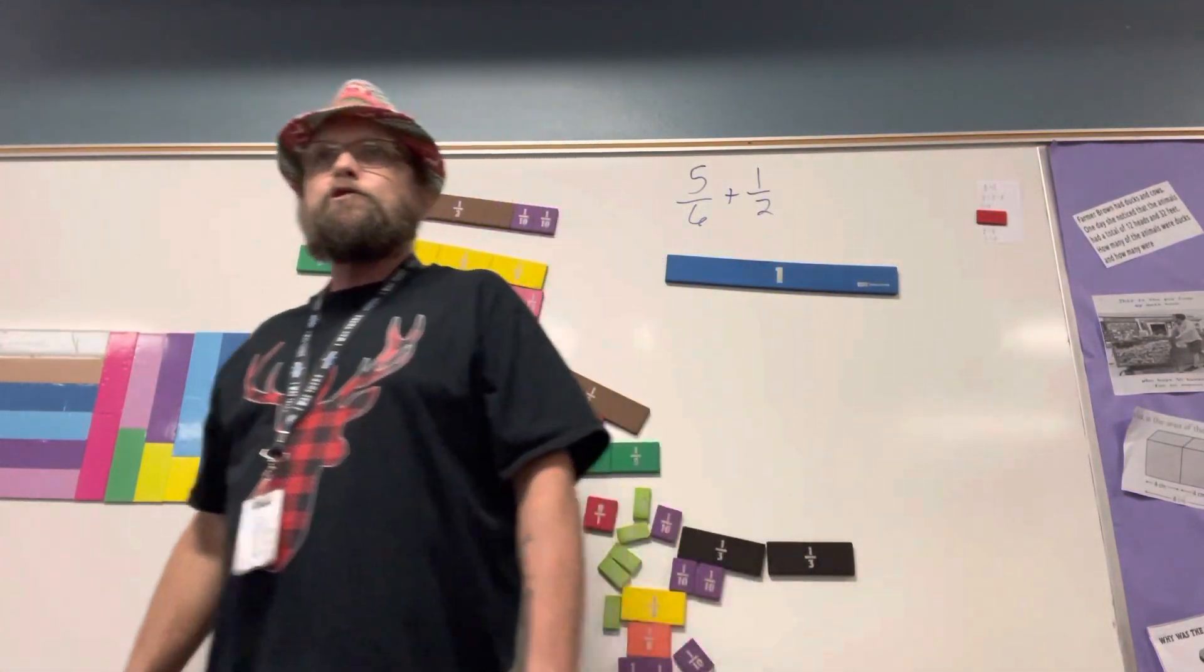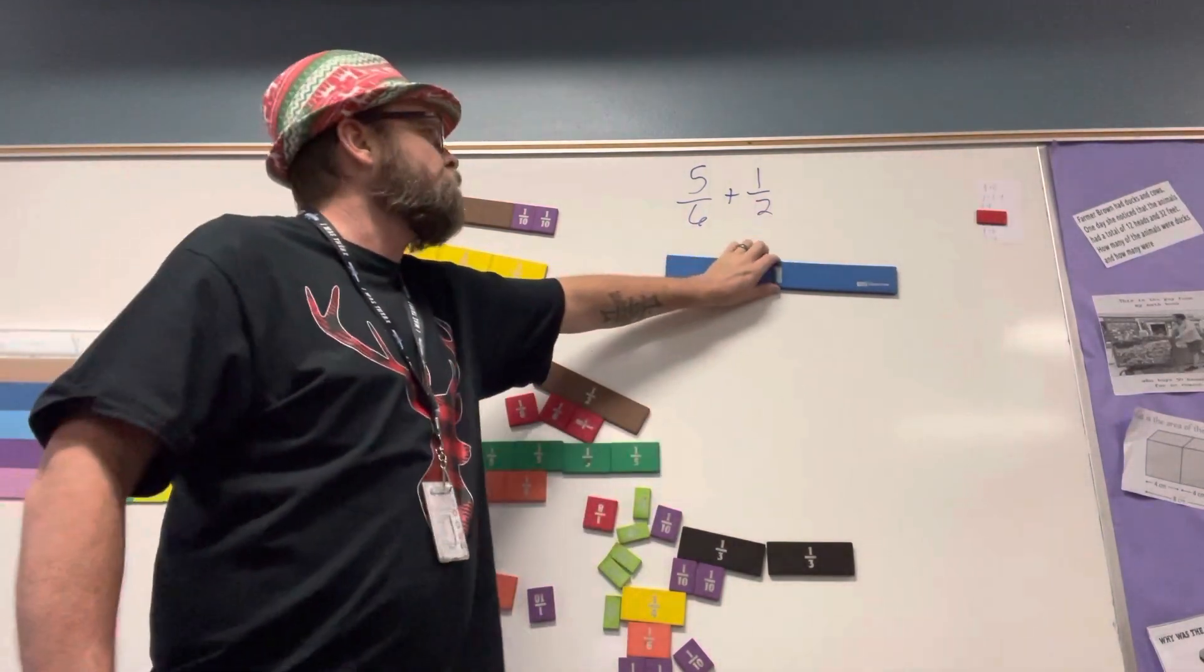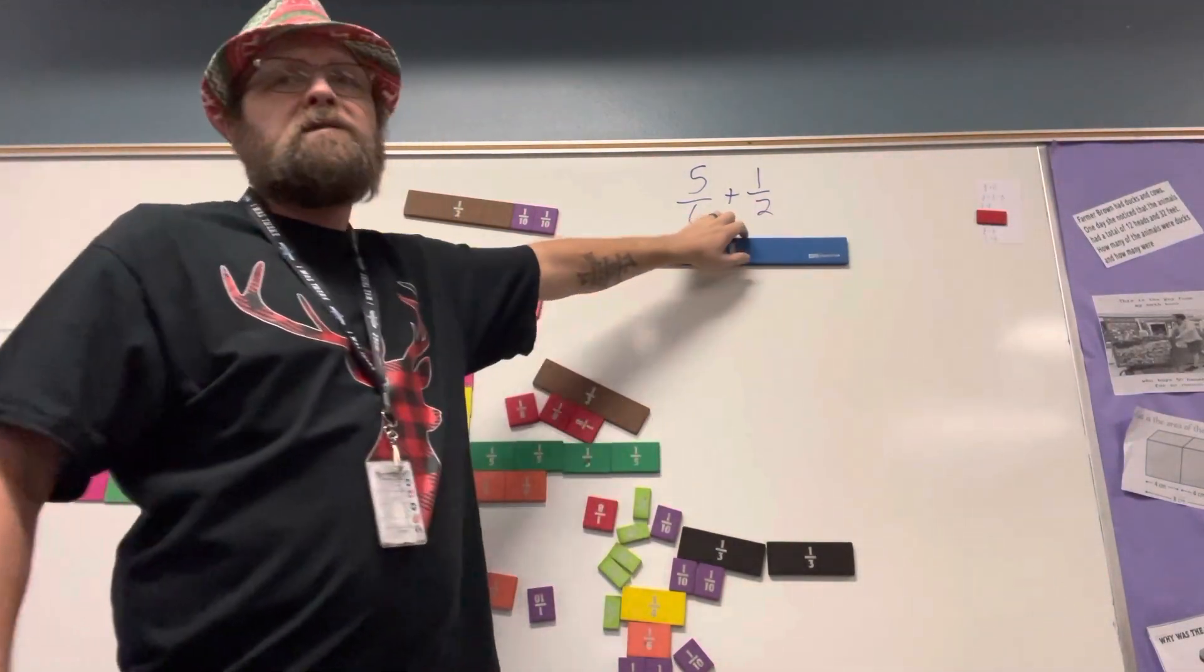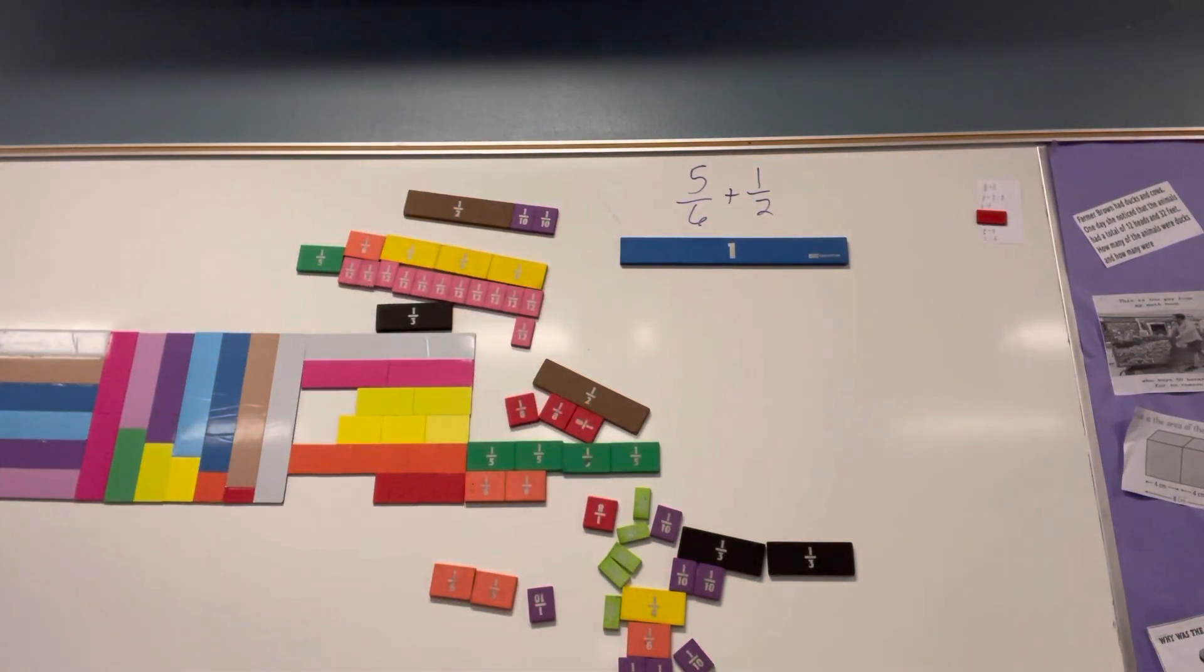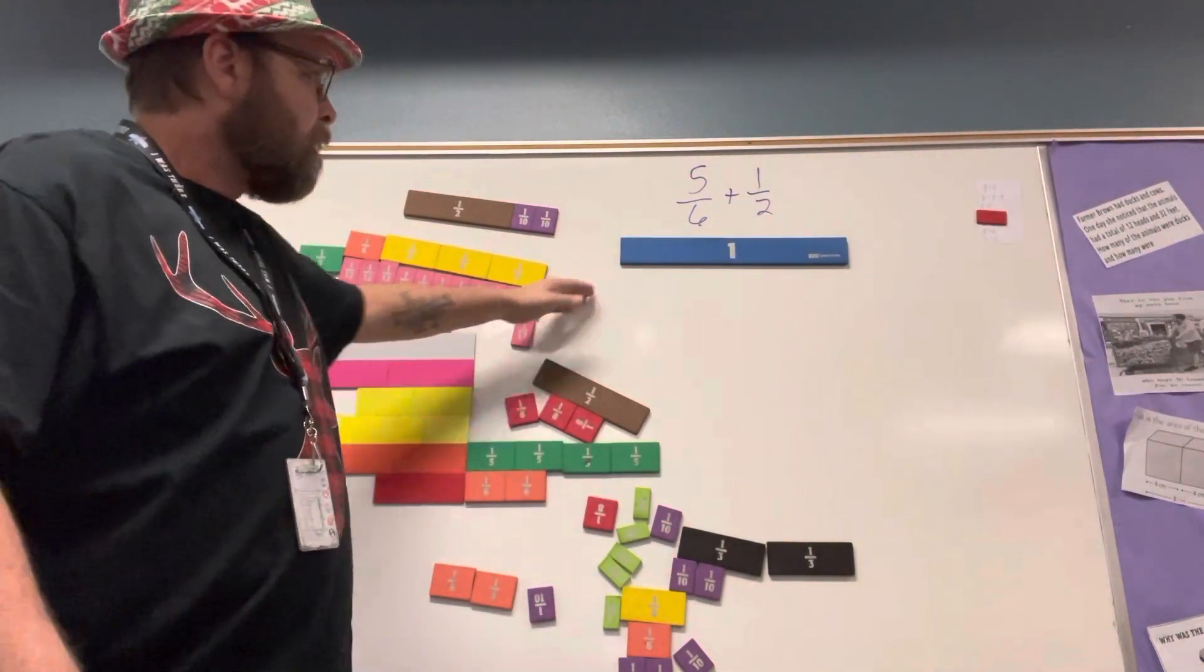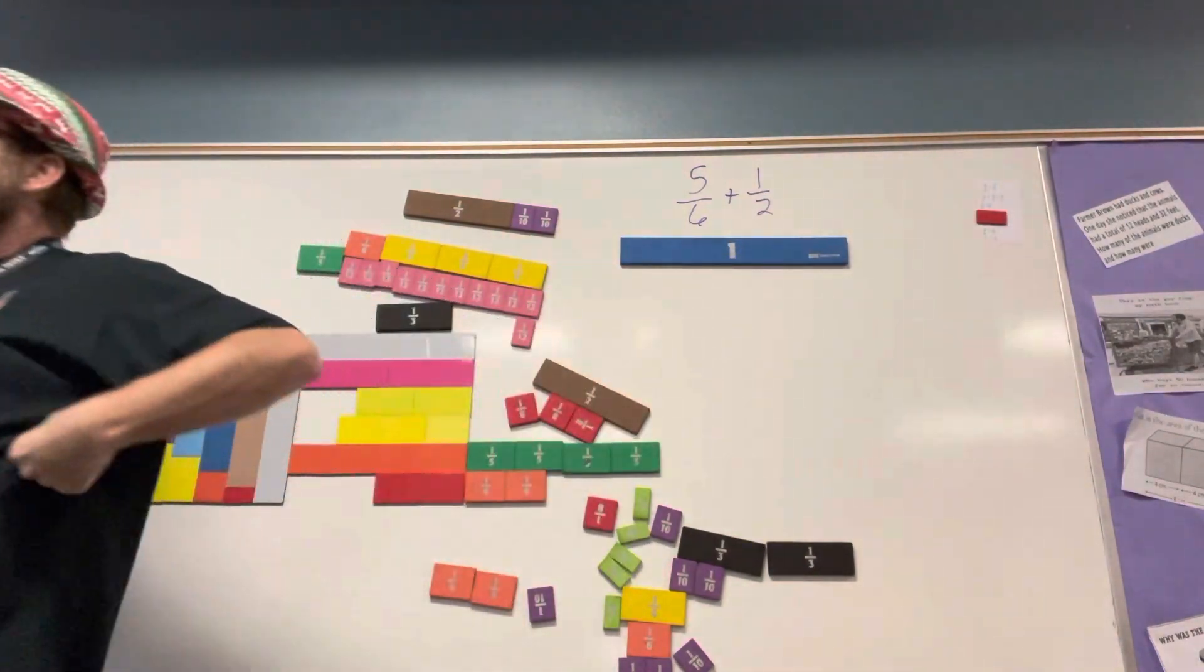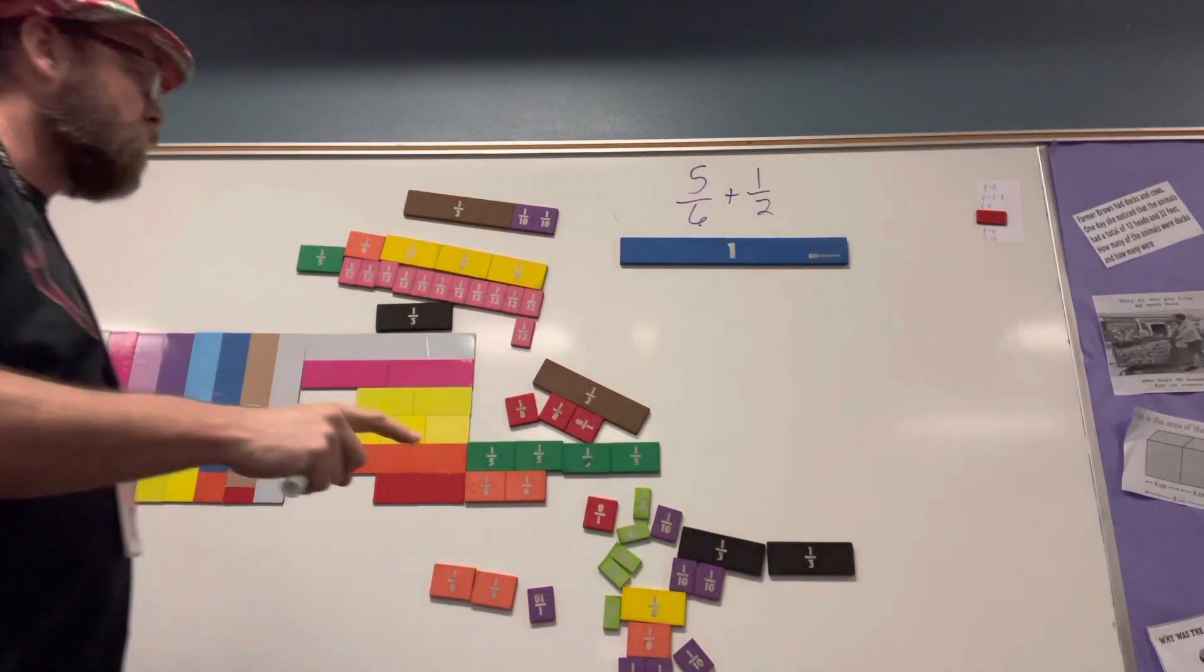Ladies and gentlemen, boys and girls, children of all ages, we continue our exploration of adding fractions using models with the problem five sixths plus one half. We always start by comparing it with one. That way it will tell me whether I have a whole number in my answer.